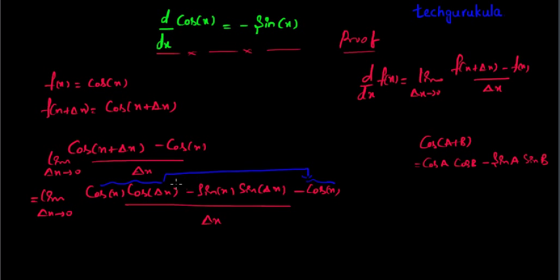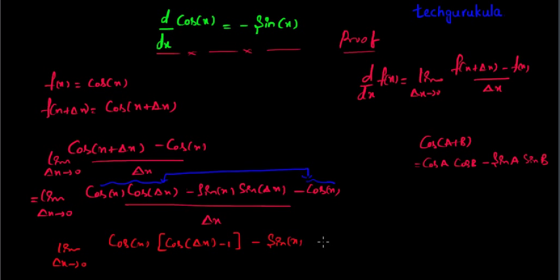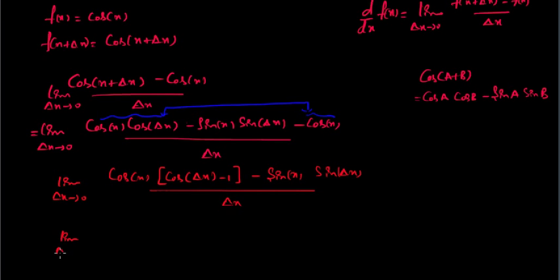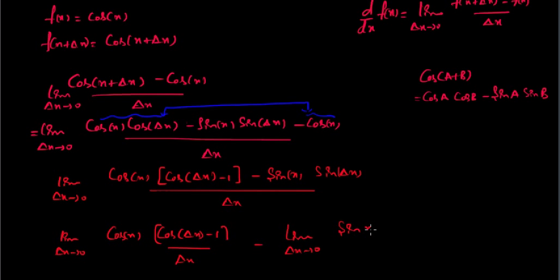Now what we are going to do is take the first term and the third term, take cos of x common, and rewrite it. By doing that, we get limit del x tends to 0 of cos x times cos del x minus 1, minus sin x times sin del x, divided by del x. This can also be written as: limit del x tends to 0 of cos x times cos del x minus 1 divided by del x, minus limit del x tends to 0 of sin x times sin del x divided by del x.